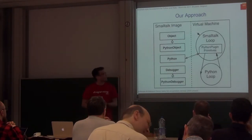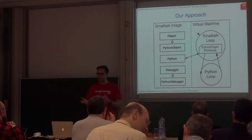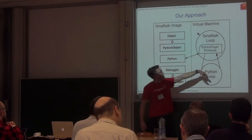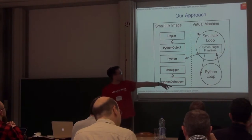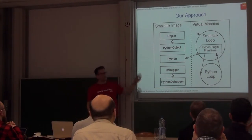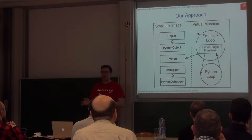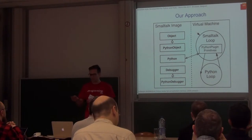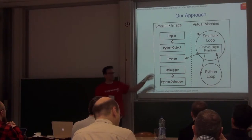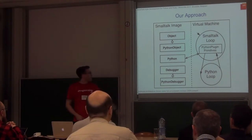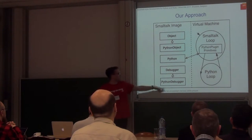Here's our approach: we combined multiple interpreters using interpreter composition. On the right you see the virtual machine — there's a Smalltalk interpreter loop and a Python interpreter loop. On the left you see the stuff that's in the image: a Python object used to expose all objects from the Pharo image, a Python class which is a helper class communicating with our Python plugin primitives, and a debugger which inherits from the Smalltalk debugger that we can use to debug Python.